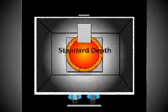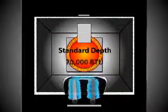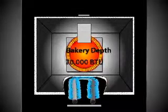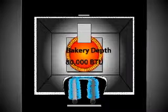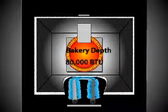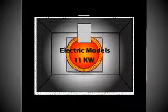The standard depth gas oven has a 70,000 BTU output. The bakery depth has an 80,000 BTU output, which is ideal for high production cooking that demands fast recovery. Both standard and bakery depth electric models are 11 kilowatts.